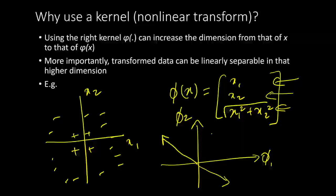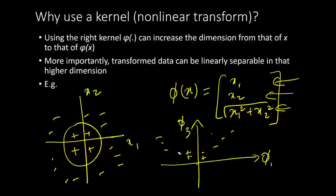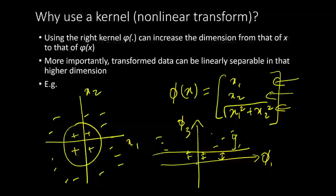If we plot phi1 versus phi3, the positive and negative classes become linearly separable. A linear hyperplane in phi1-phi2-phi3 space corresponds to a circular boundary in the original x1-x2 space. Many times we need to transform data into many — possibly even infinite — dimensions to find a linear boundary.